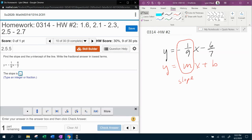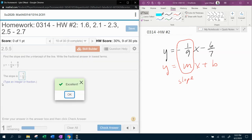So we can go ahead and input the slope, negative 1 ninth, and check it. Excellent.